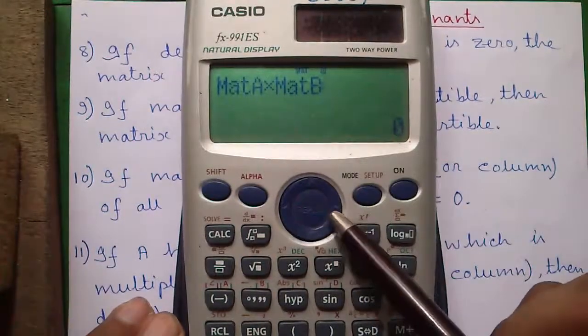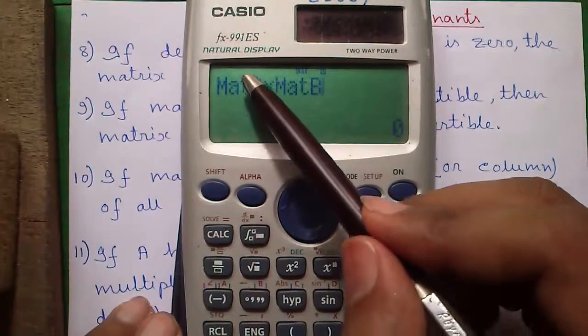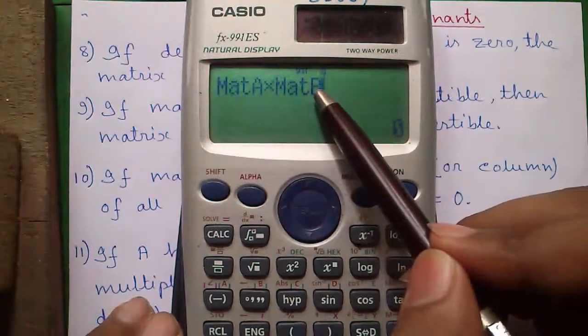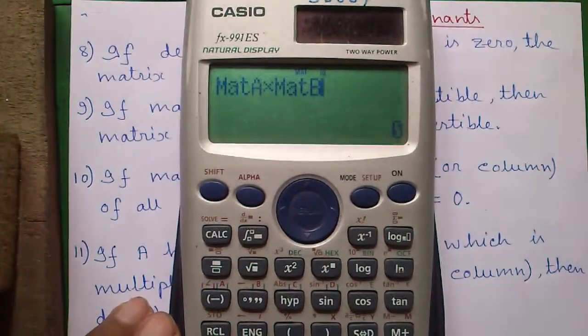So determinant for matrix A was 0. That means matrix A is not invertible. So matrix A into B will not be invertible also.